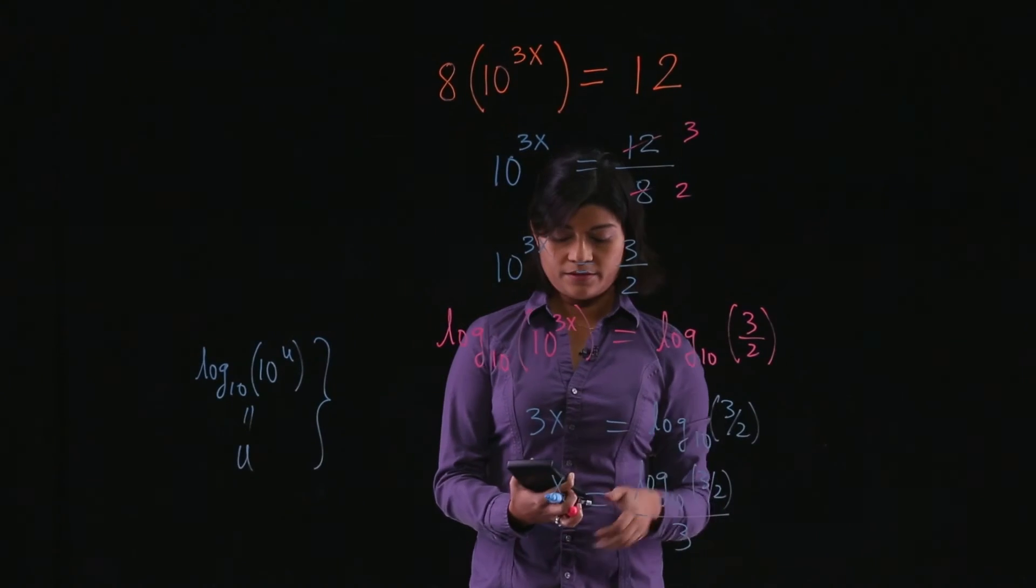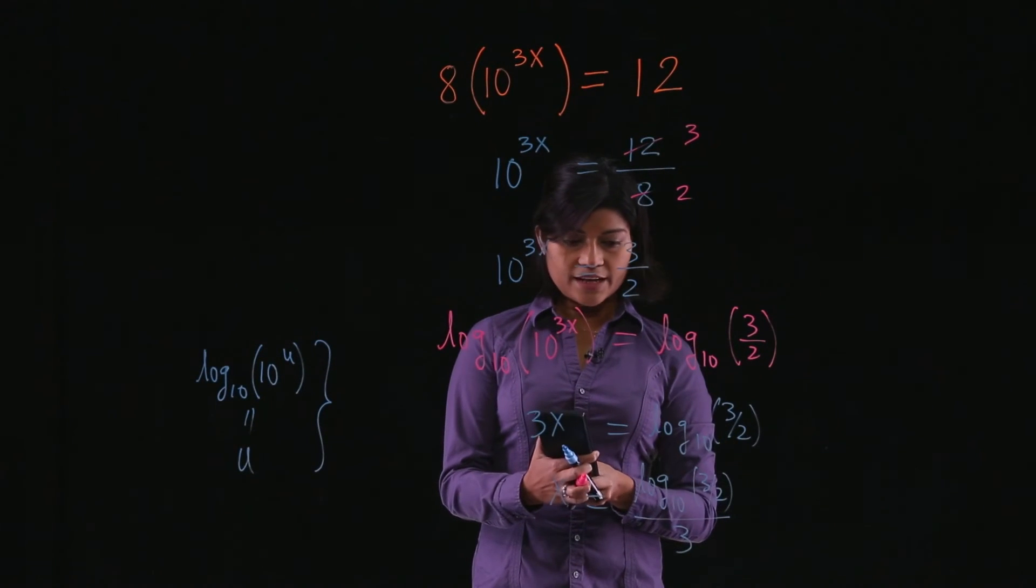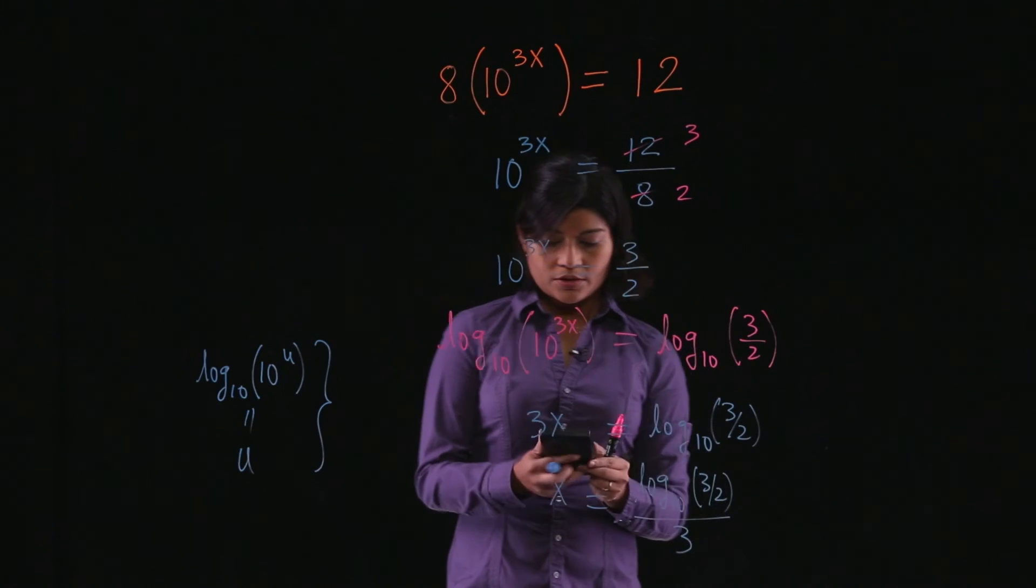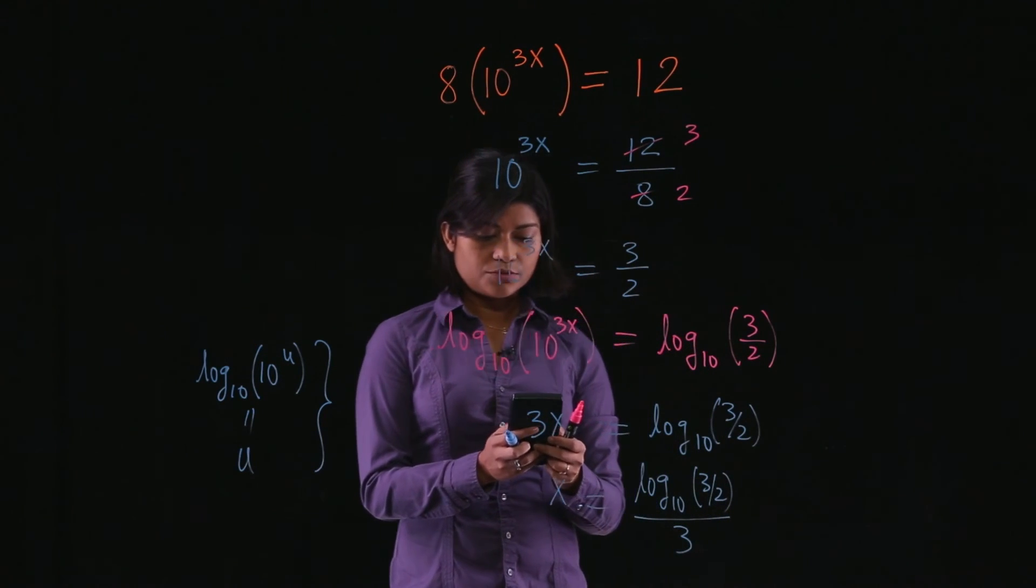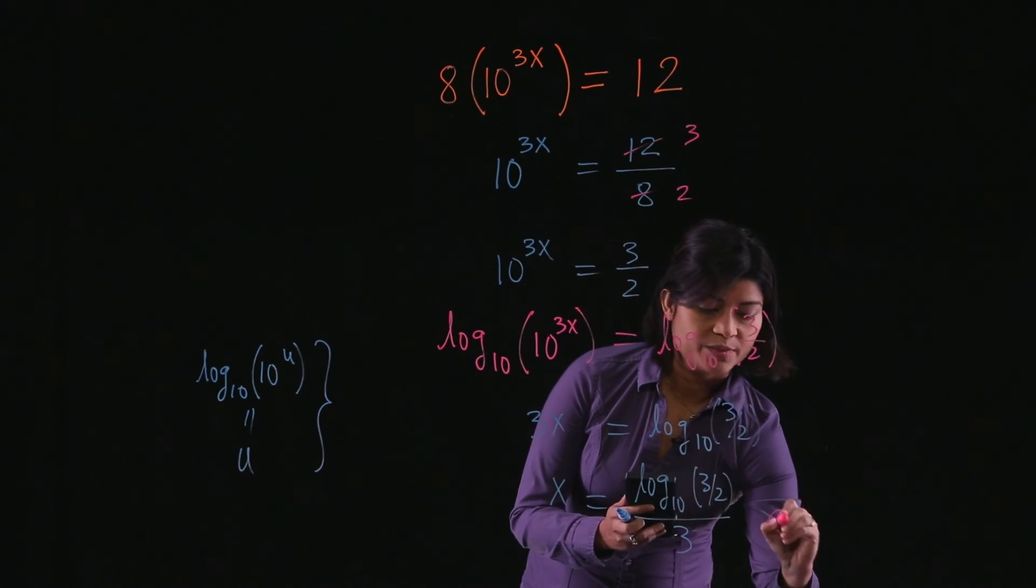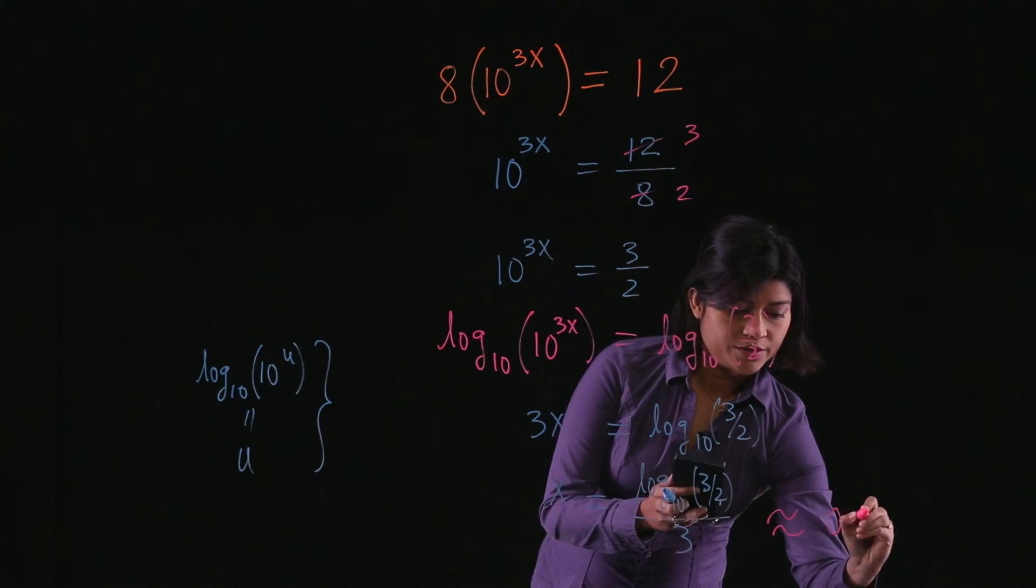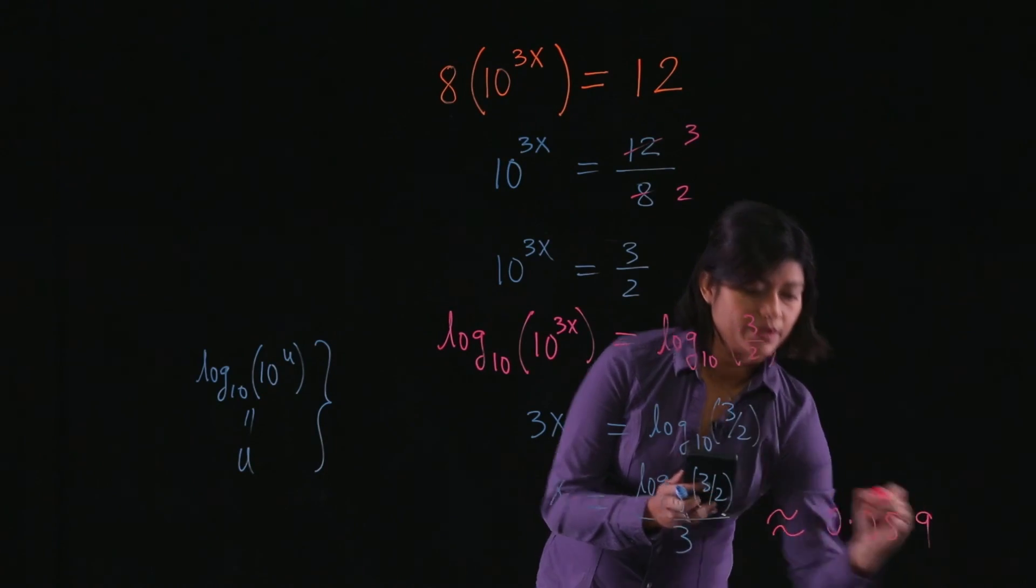Well, let's quickly find the value using a calculator. So plug it in the calculator. Logarithm of 3 half base 10 divided by 3 is approximately 0.059.